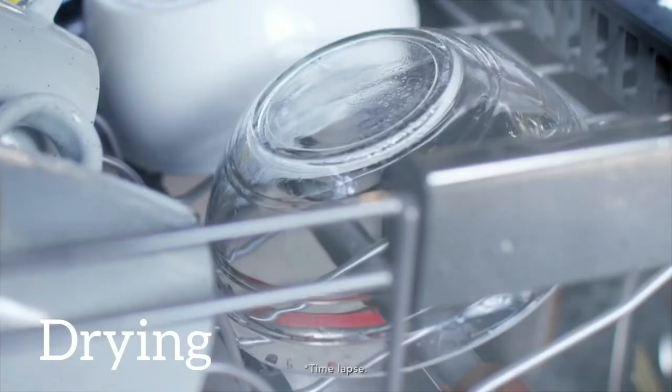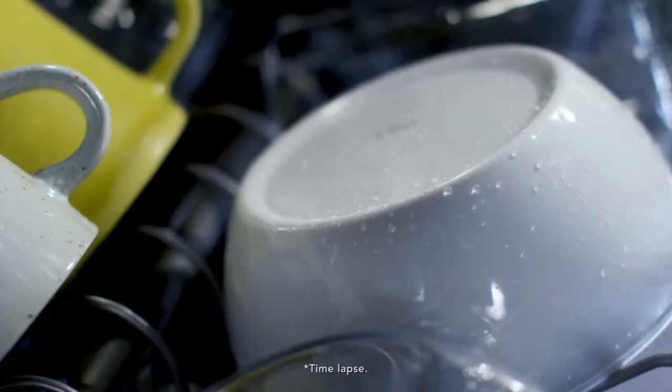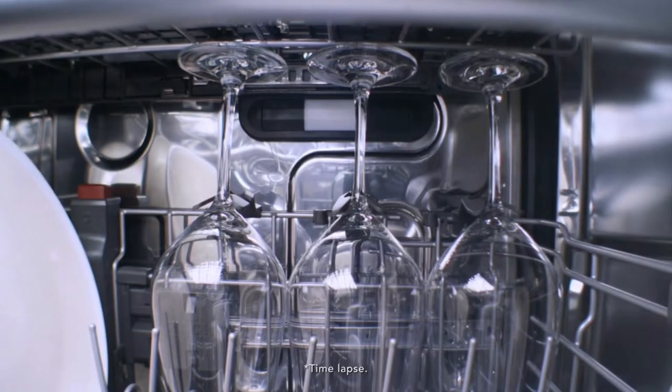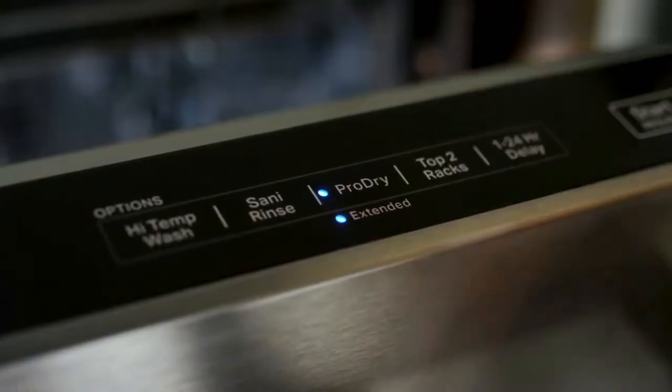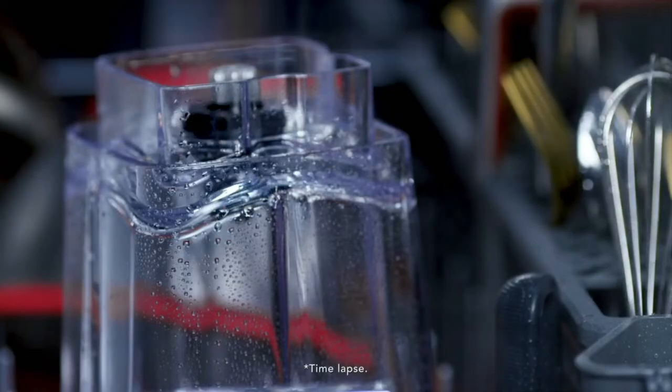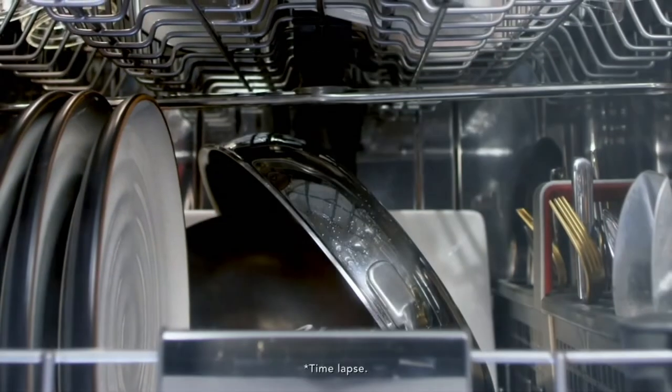Drying: The KitchenAid heats the final rinse water and the air inside the dishwasher for drying the dishes. It has an extended heat dry option to keep the heating element activated for a longer period of time to help dishes come out completely dry.